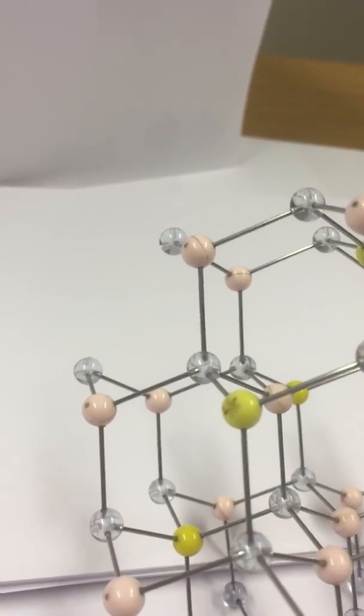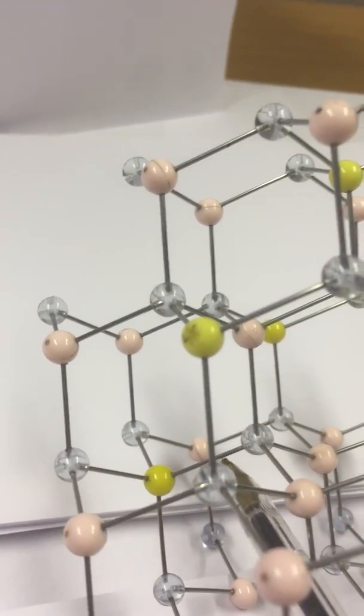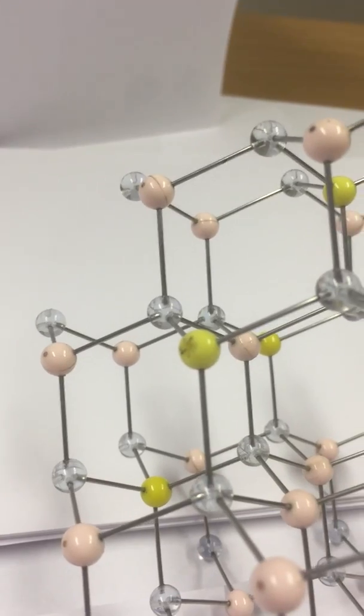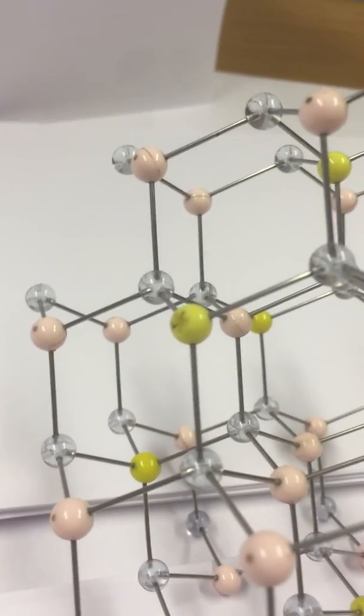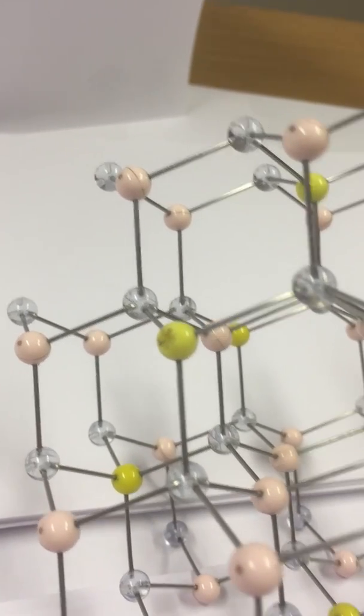So this line between the gallium and the arsenic, these two atoms at each lattice site,